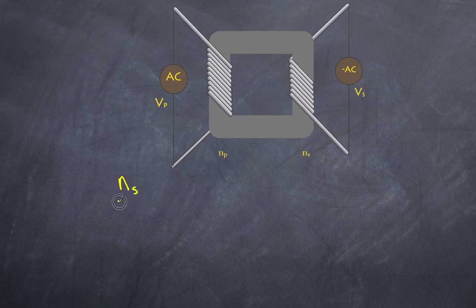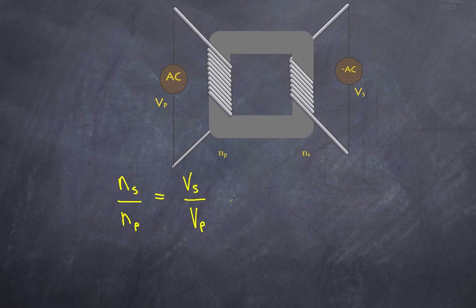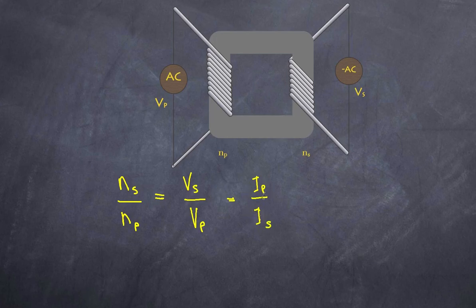The ratio of turns determines by how much the voltage is stepped up or stepped down. The ratio of the secondary number of turns to the primary number of turns equals the ratio of the secondary voltage to the primary voltage. So if I have 500 turns on the secondary and 250 turns on the primary, the ratio is one-half — and an input of 600 volts would give an output of only 300 volts. For current, however, the relationship is reversed: the primary current divided by the secondary current equals that same ratio.